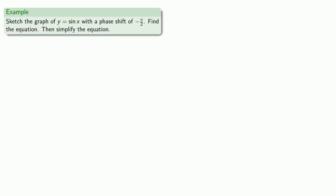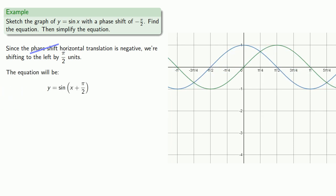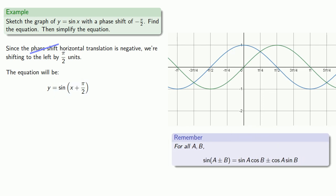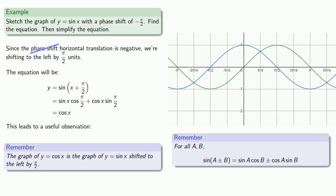One important transformation: let's take the graph of y equals sine of x and do a phase shift of negative pi over 2. Since the phase shift, or horizontal translation, is negative, we're shifting to the left by pi over 2 units. Notice that our equation gives us the sine of a sum. Using the sine of a sum identity, and noting that cosine of pi over 2 and sine of pi over 2 have particularly nice values, this simplifies to cosine x. So the graph of y equals cosine x is the graph of y equals sine x shifted to the left by pi over 2.